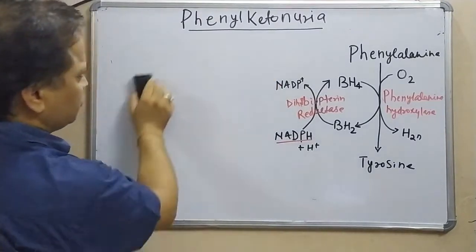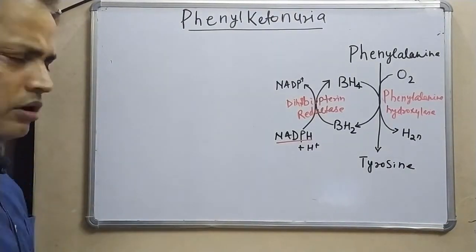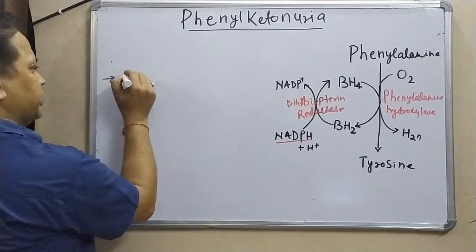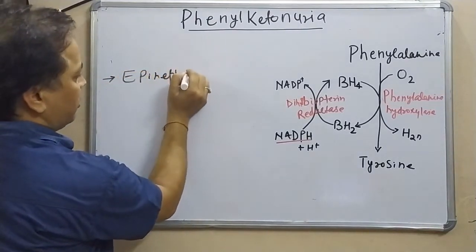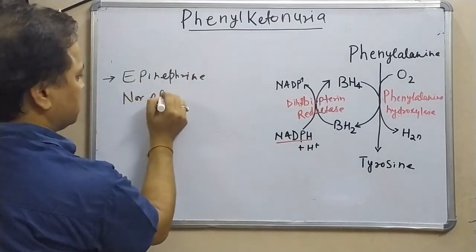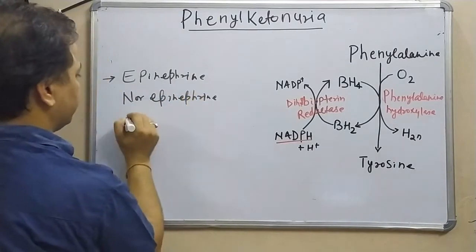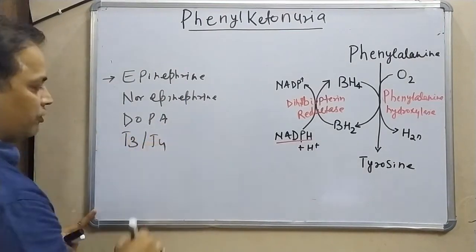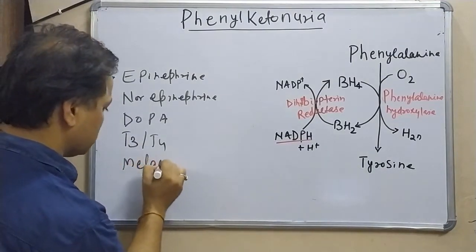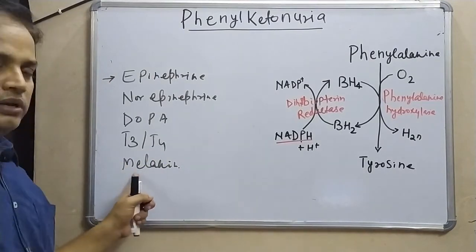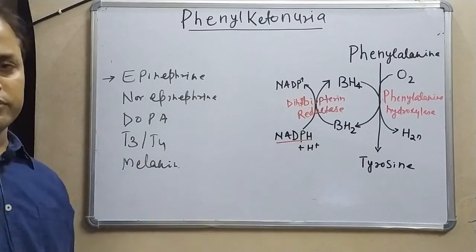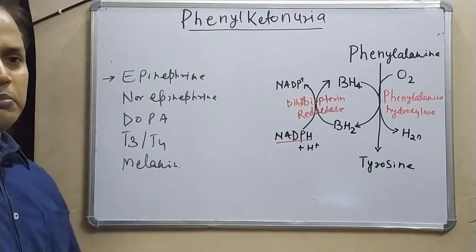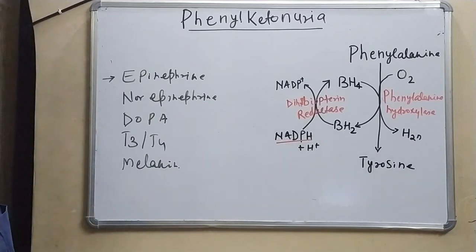The important biomolecules that tyrosine and phenylalanine give us include: epinephrine, norepinephrine, dopamine (dopa), thyroid hormones T3 and T4, and melanin. Melanin is the color-producing substance of our body — it determines skin color, hair color, and eye color. These are the important biomolecules obtained from phenylalanine and tyrosine.